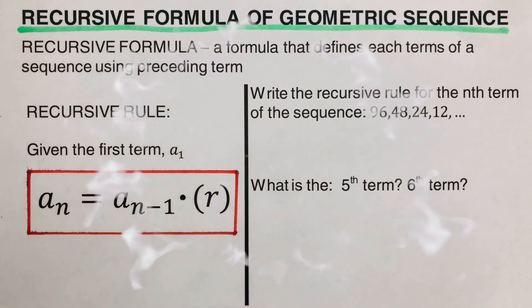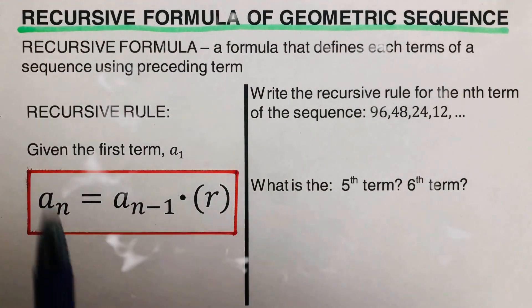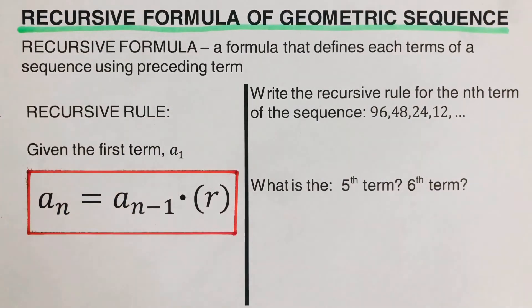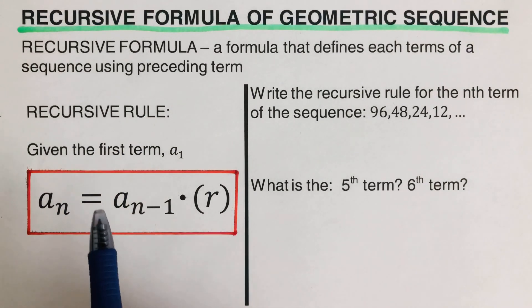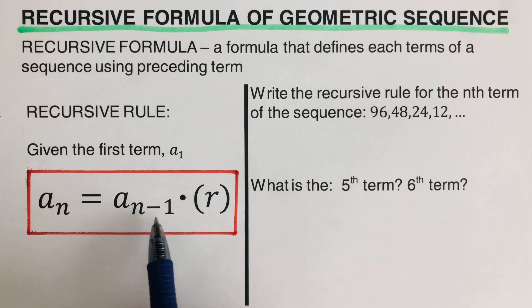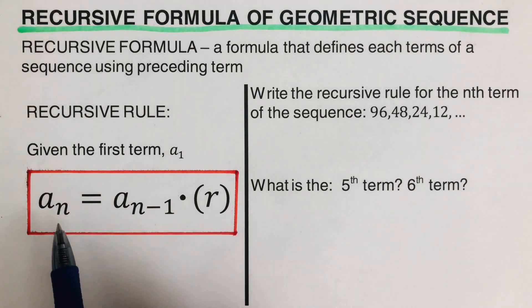This video will focus on the recursive formula of a geometric sequence. By definition, the recursive formula is a formula that defines each term of a sequence using the preceding term. This is the general form of a recursive formula: a_n is equal to a_{n-1} times r.